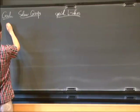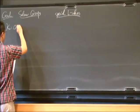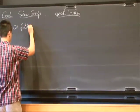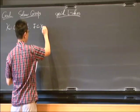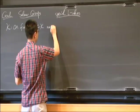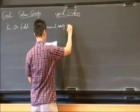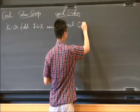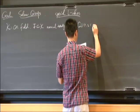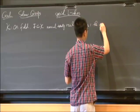First let me fix the notation. K is a CM field, F is the maximal totally real subfield.